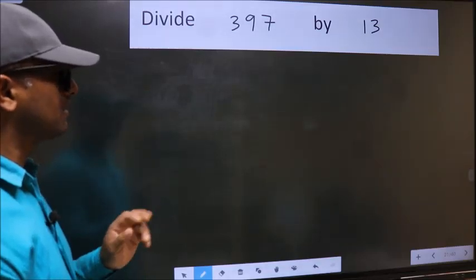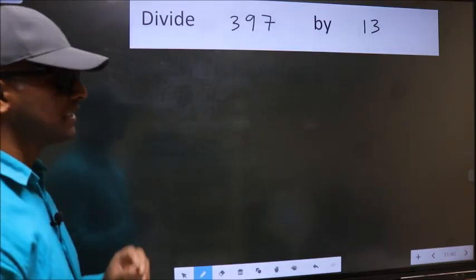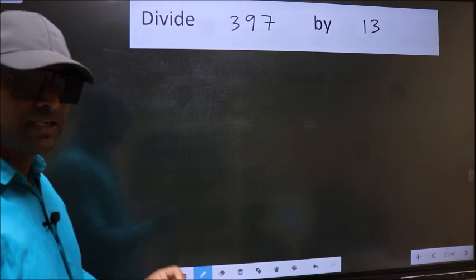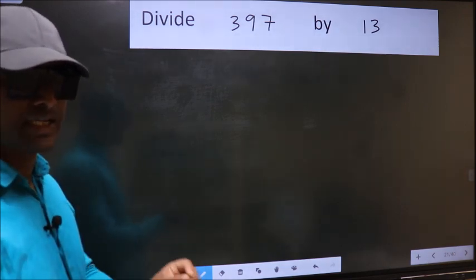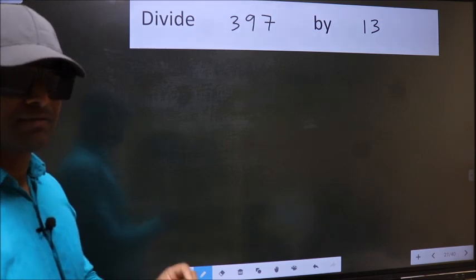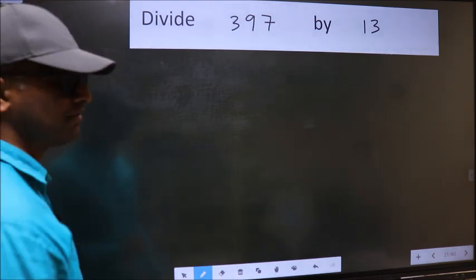Divide 397 by 13. While doing this division, many do this mistake. What is the mistake that they do? I will let you know. But before that, we should frame it in this way.